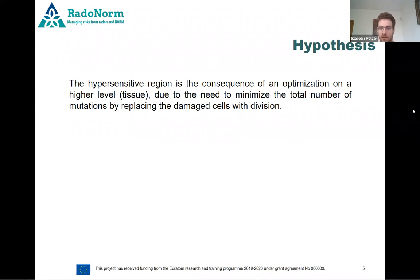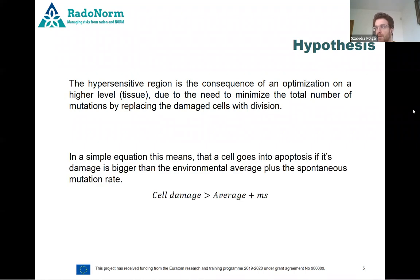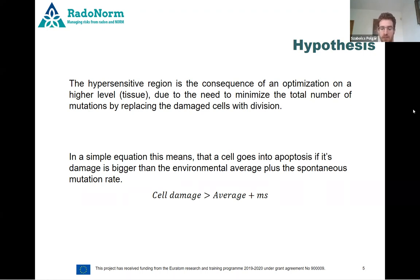In a simple equation, this means that the cell goes into apoptosis if it compares its own DNA damage to an environmental average from the signal molecules of its local neighbors, plus the spontaneous mutation rate, which is the consequence of mutations arising from cell division. If the cell has greater damage than this threshold, it goes into apoptosis.